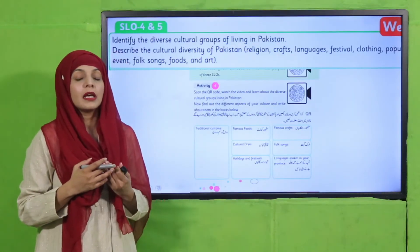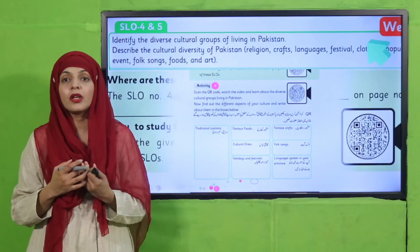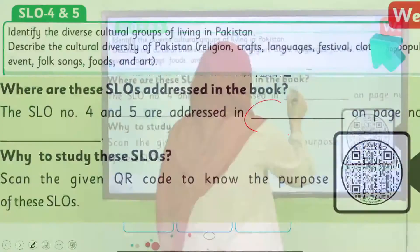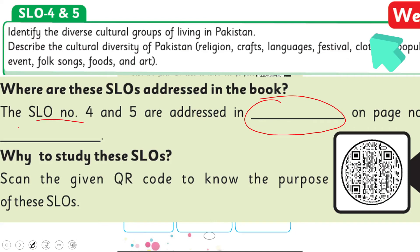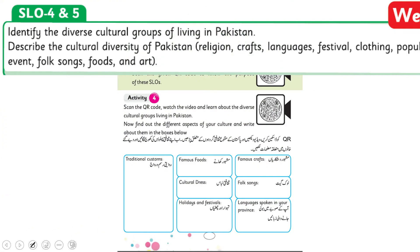So my dear students, next what you will do is aapne in dono SLOs ko hor se parhna hai. Parhne ke baad, find it out in your Social Studies Five book, then write down the name of your book and page number in the blanks. Next, aapne isi SLO ke saath jo QR code hai usko scan karna hai. Scan karne pe jo video aapko milegi, usko hor se dekhna hai, and then you will be able to complete these activities given with this SLO.